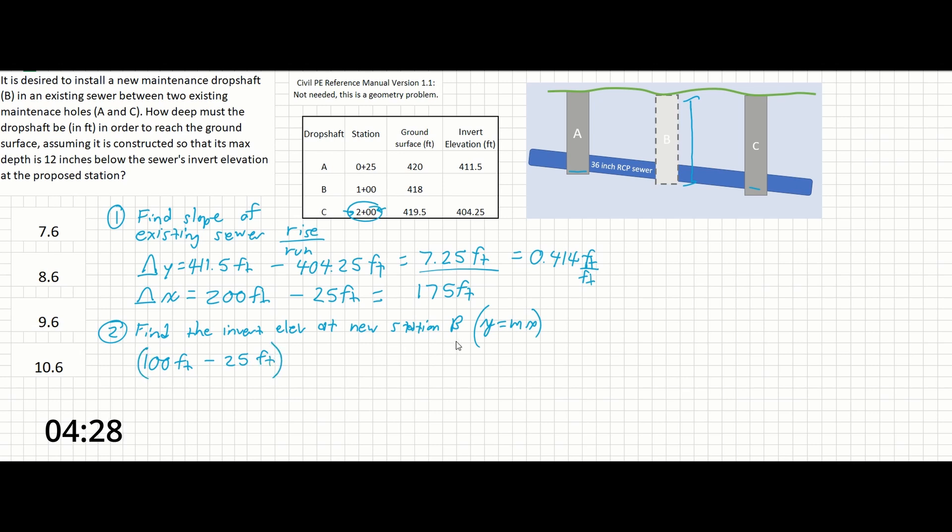And so that's going to be our X distance here. And then our M is our slope, which we calculated out to be 0.414 feet per feet. And this is going to be equal to 3.1 feet. So B is 3.1 feet deeper than the invert elevation at A.